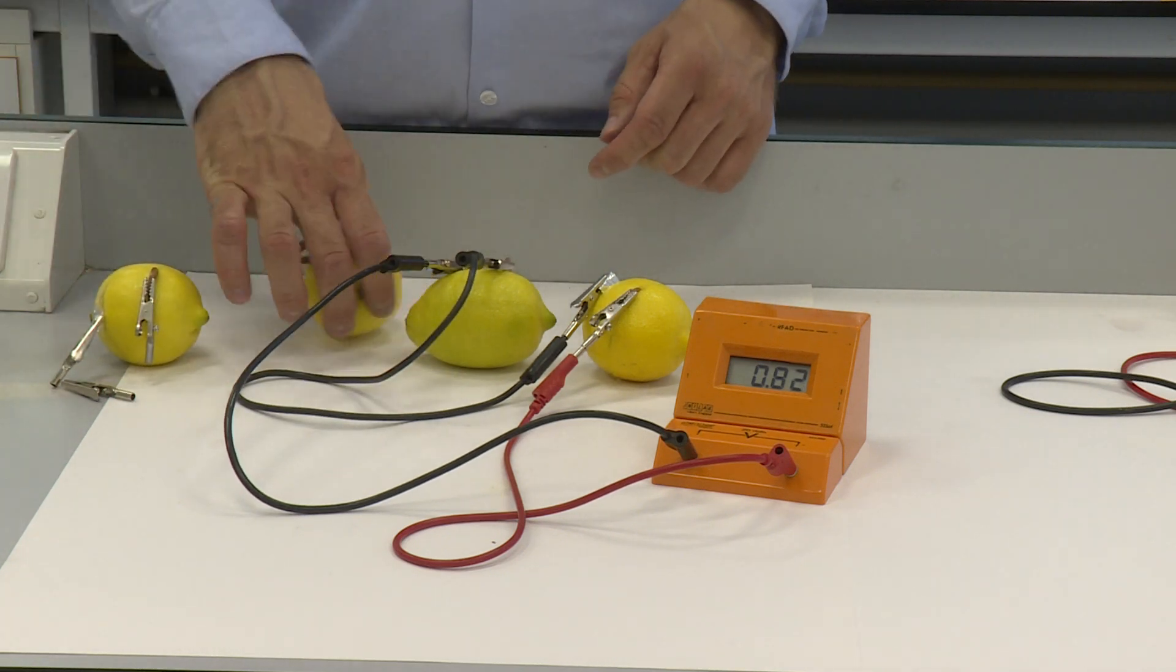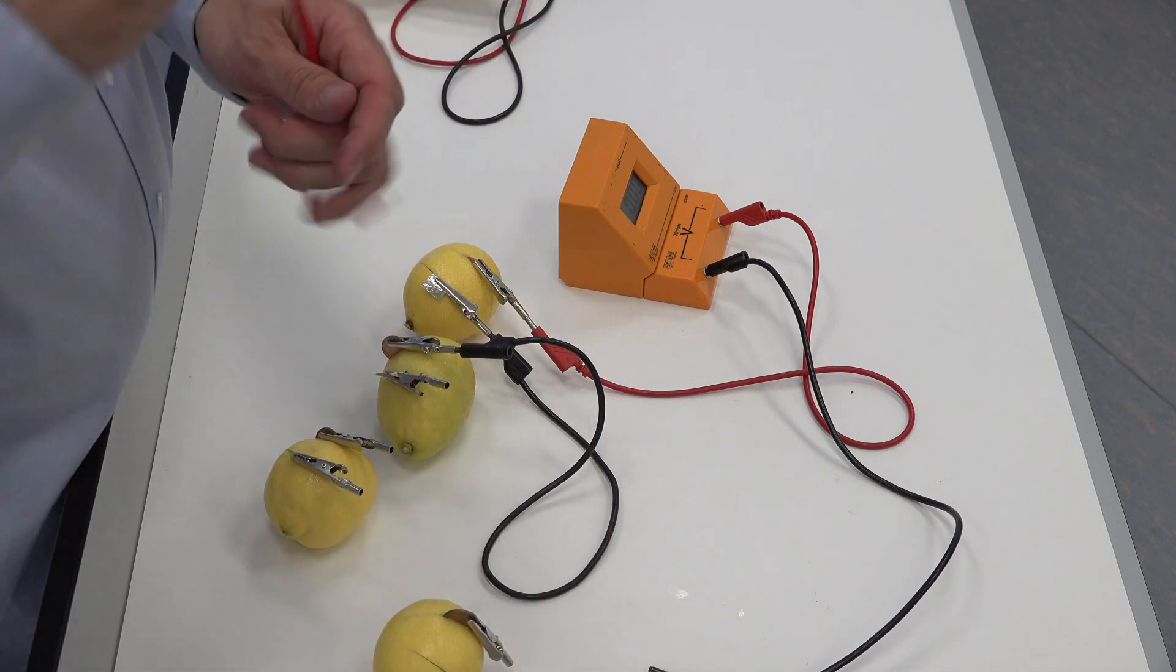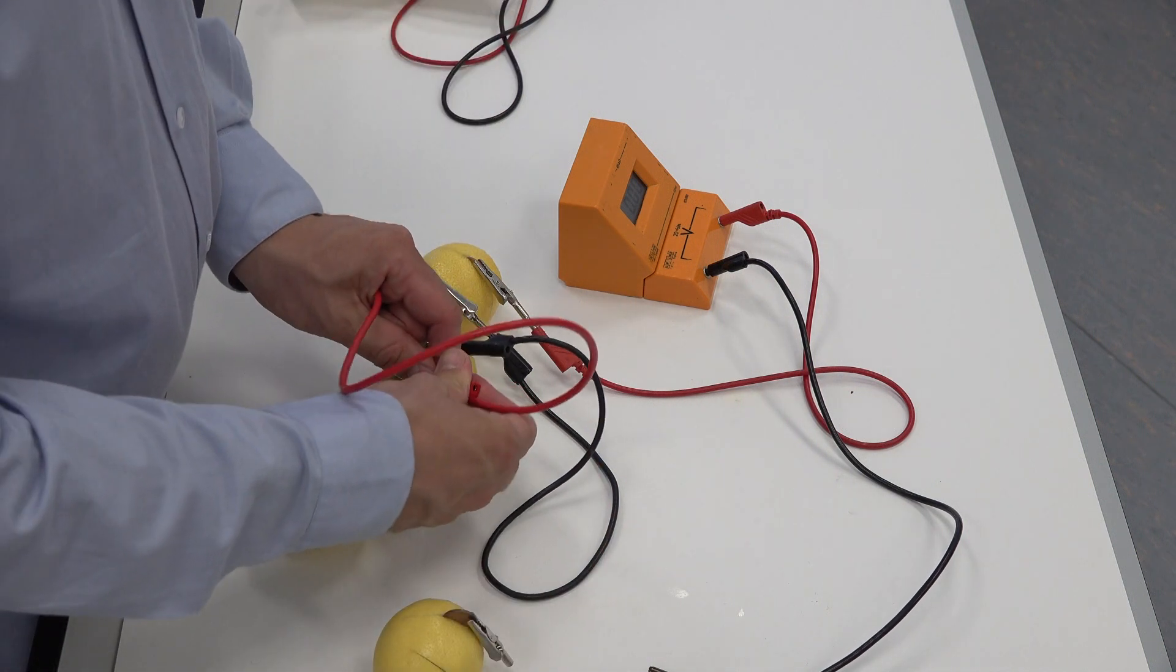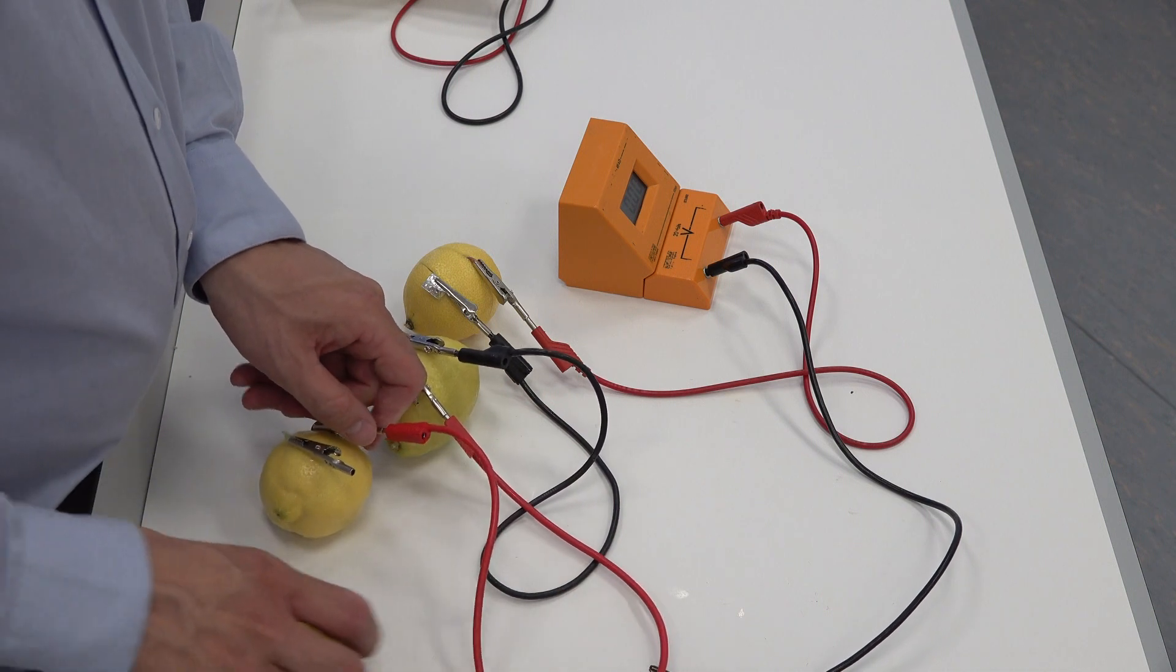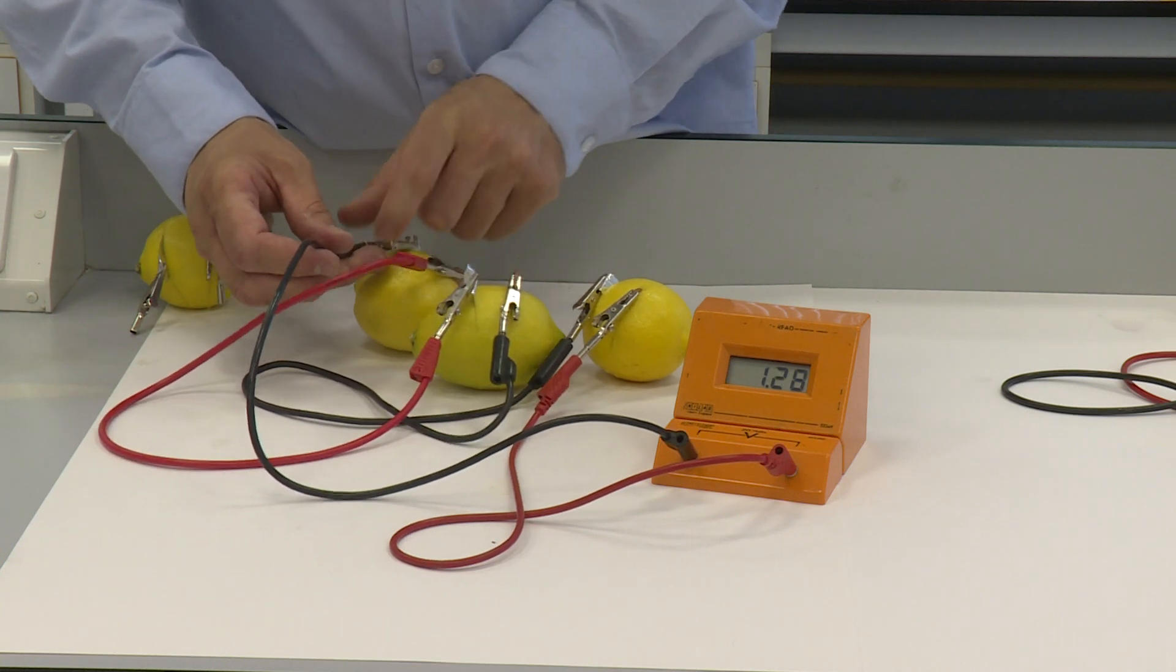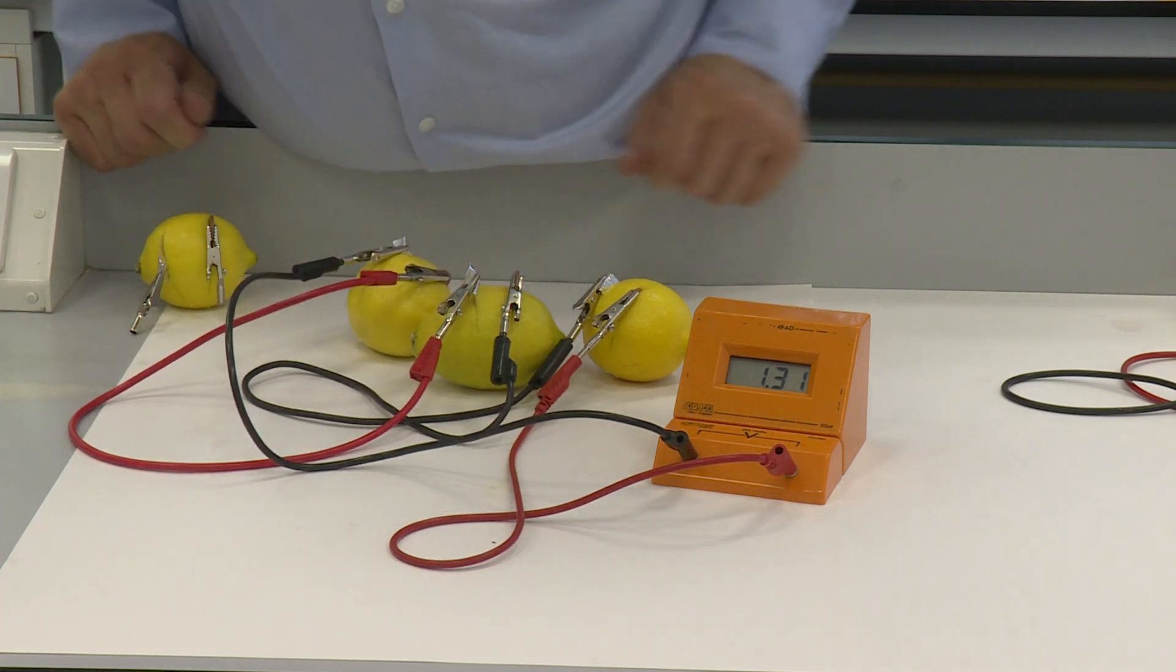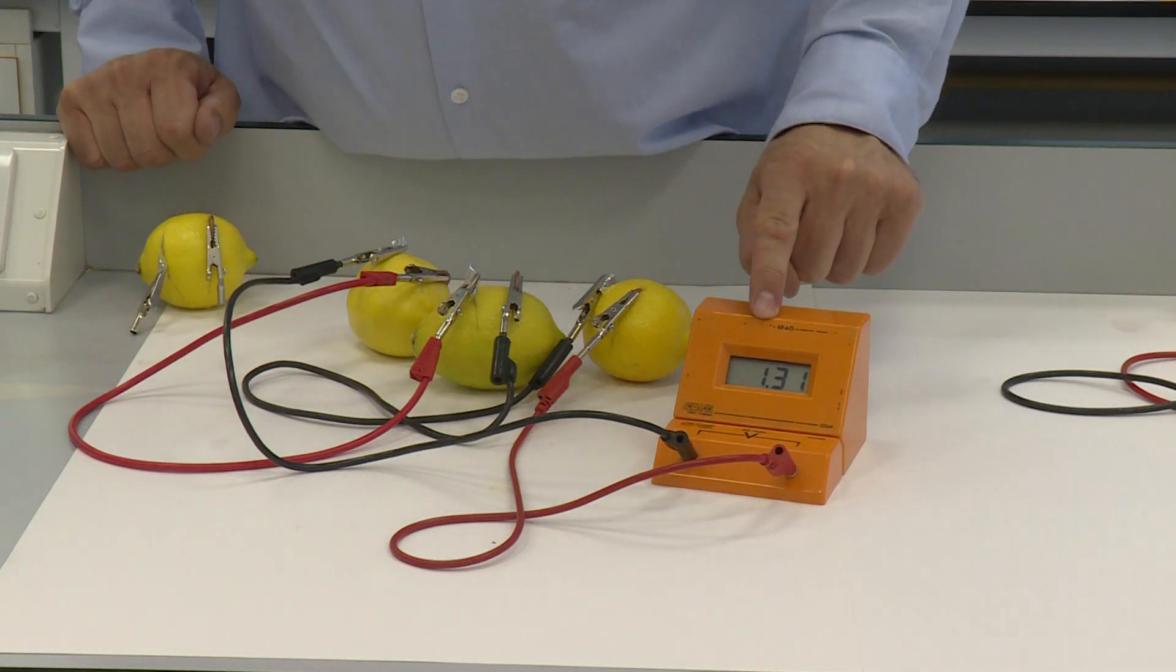Let's see what happens when we add another one. So I take a lead from the aluminum of the second lemon cell and I attach it to the copper of a third lemon cell. Once again, let's see what the reading is. We've now got more than one volt. It is 1.3 volts roughly.